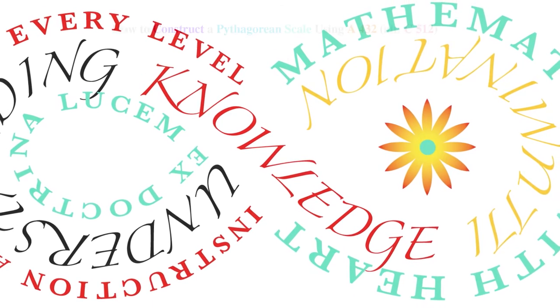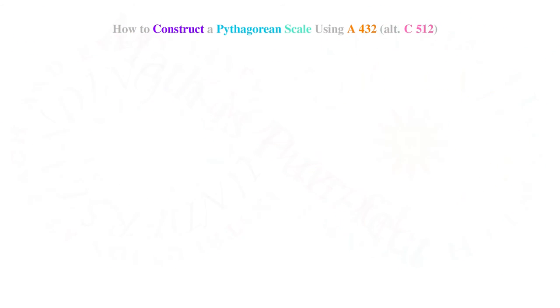Hello, this is Aloisa with Math Leopard. Today we are looking at the derivation of the Pythagorean musical scale, tuning A to 432 Hz, alternately tuning C to 512 Hz.